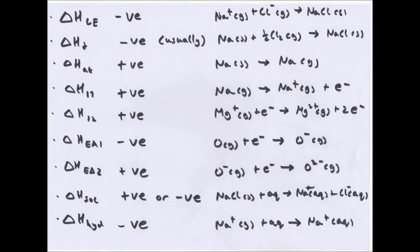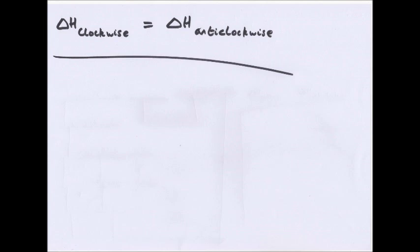A covalent substance does not have a lattice enthalpy because there are no ions in the structure. Lattice enthalpies cannot be measured directly because it's impossible to form one mole of an ionic lattice from gaseous ions. So we're now going to look at something called a Born-Haber cycle. The key principle is that the enthalpy changes going in a clockwise direction equal those going in an anticlockwise direction.